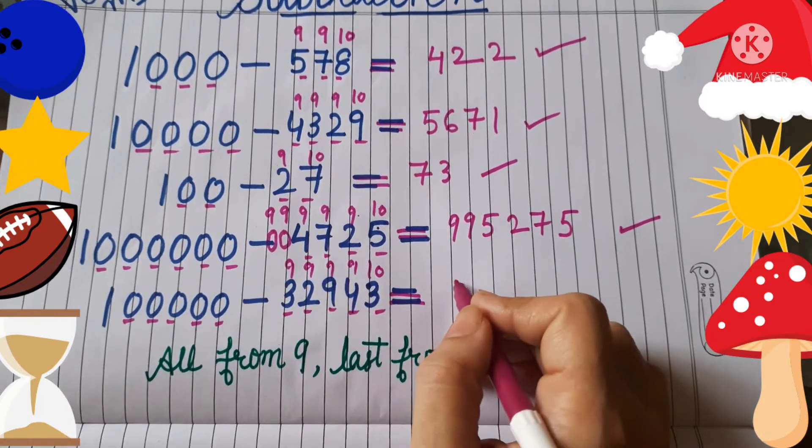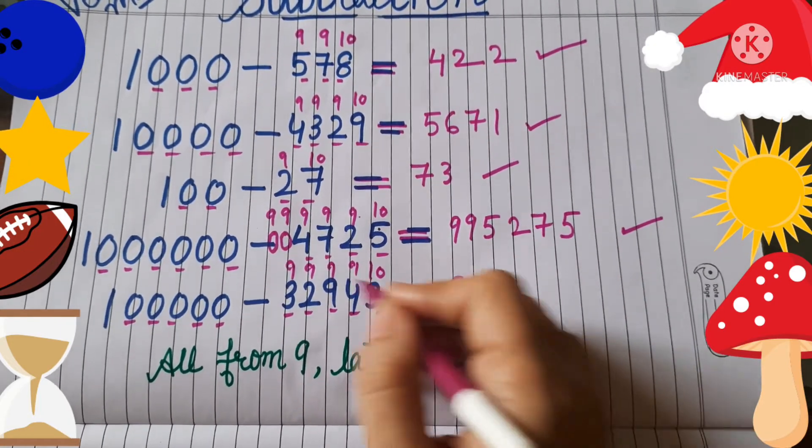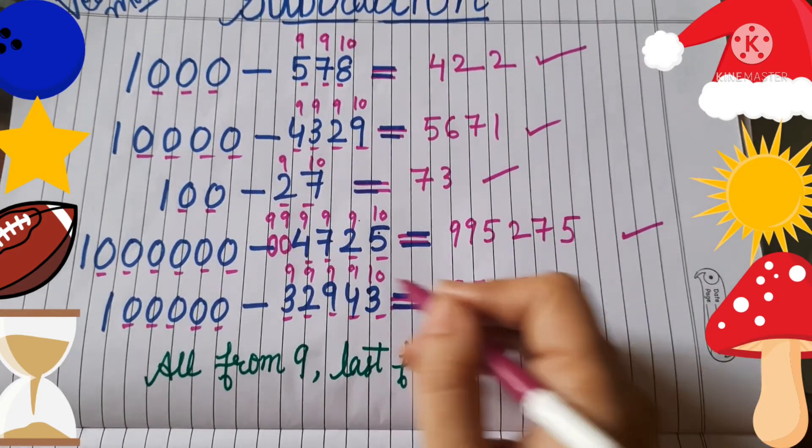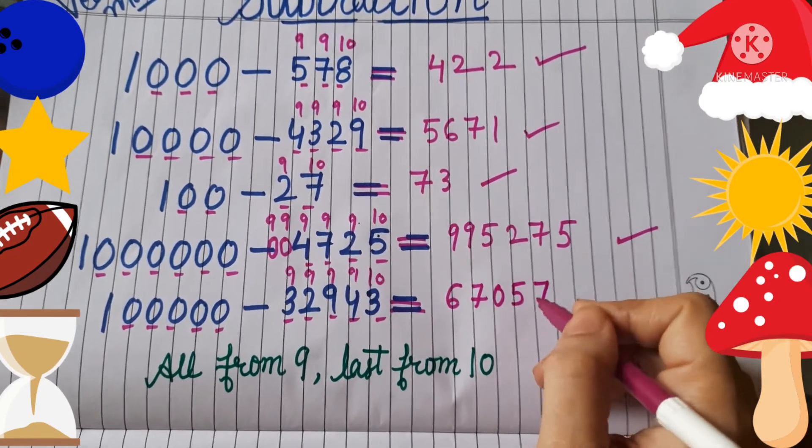9 minus 3 is 6, 9 minus 2 is 7, 9 minus 9 is 0, 9 minus 4 is 5, 10 minus 3 is 7. That's done.